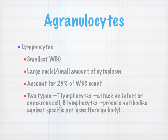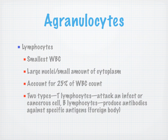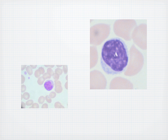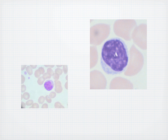Agranulocytes — beginning with lymphocytes: they're the smallest white blood cells with a large nucleus and a small amount of cytoplasm. They account for 25% of the white blood count. There are two types: T lymphocytes attack infected or cancerous cells, and B lymphocytes produce antibodies against specific antigens like foreign bodies. Note the large nucleus-to-cytoplasm ratio.